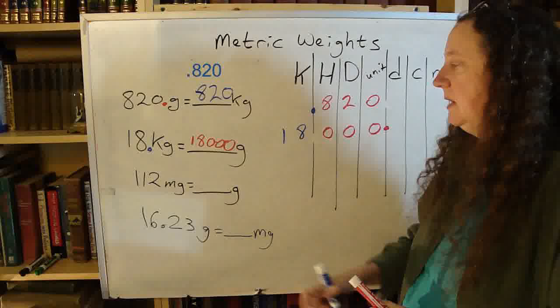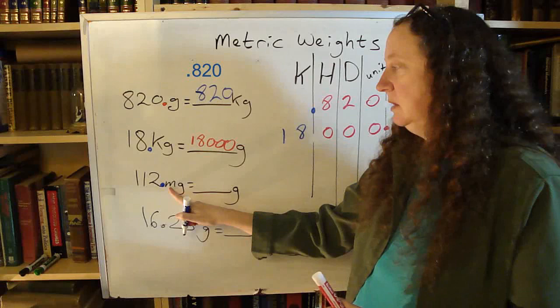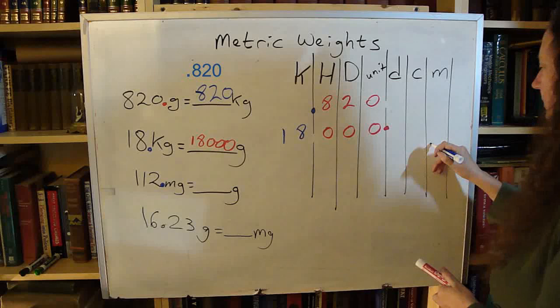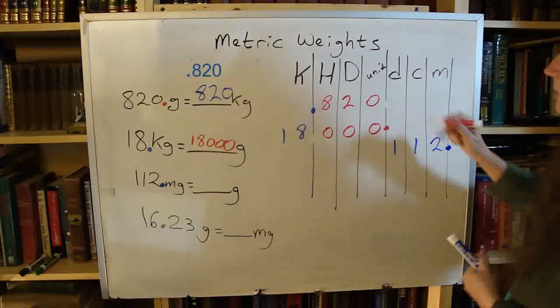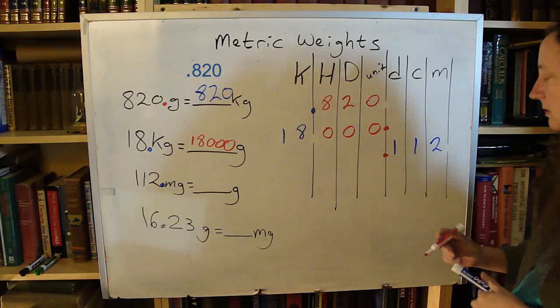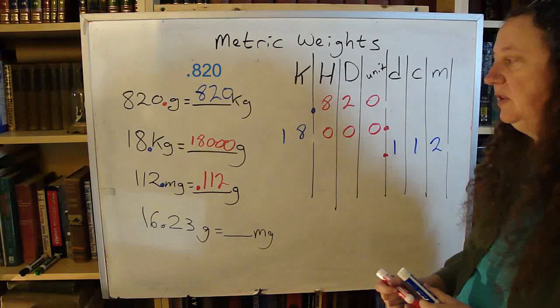Milligrams to grams - same process. Where is your decimal point? That decimal point is going to go at the end of the milli. There's milli. Fill in my numbers. My new decimal point is going to go at the end of the grams column, my units. Get rid of my old decimal point, and there is my number. So 112 milligrams is the same as .112 grams.